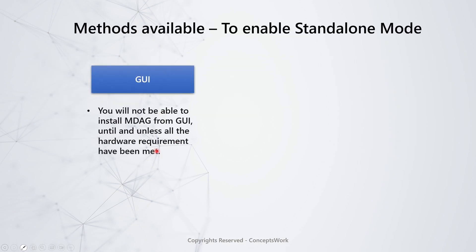When it comes to methods available, the first one is the GUI method — you can go to Control Panel and install the Windows feature for Microsoft Defender Application Guard. Wherever you see MDAG, it means Microsoft Defender Application Guard. With the old naming convention you might also see Windows Defender Application Guard, but the current name is Microsoft Defender Application Guard.